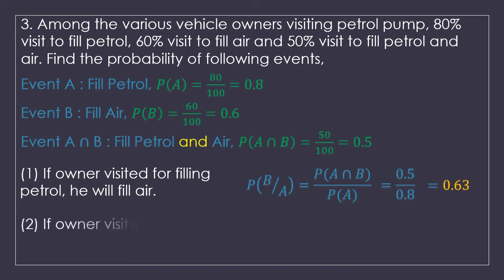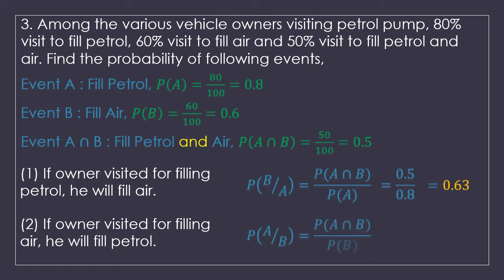The second sub-question: if the owner visited for filling air, find the probability that he will fill petrol. Here the condition is event B and we need to find event A. P(A|B) = P(A ∩ B) / P(B) = 0.5 / 0.6 = 0.83. So the probability that if the owner visited for filling air, he will fill petrol is 0.83.